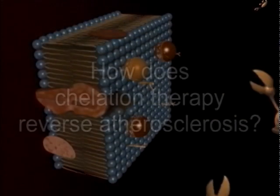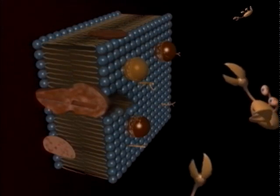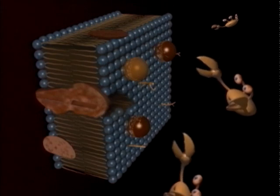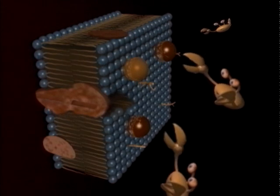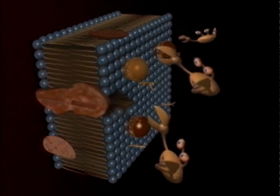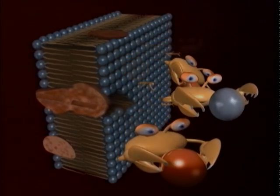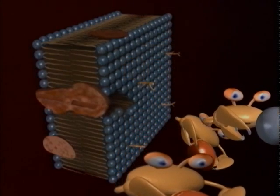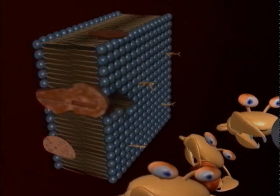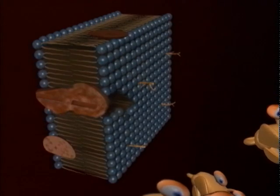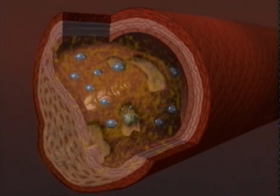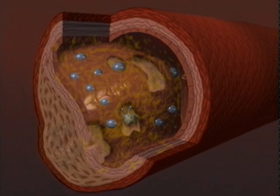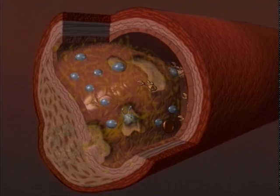With each chelation treatment, free radical-generating metal ions such as iron are cleansed from the bloodstream and cells of the artery wall. Thus the amount of damaging free radicals is greatly diminished and the healing process is able to take place in the injured arterial wall. Calcium is gradually dissolved and chelated away from the hardened atherosclerotic plaques.